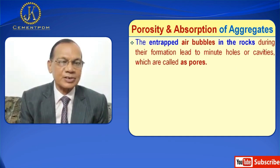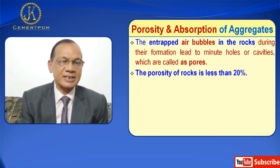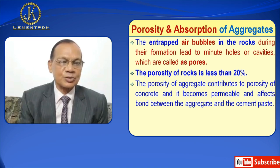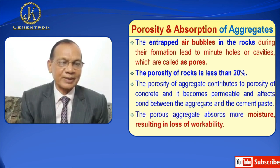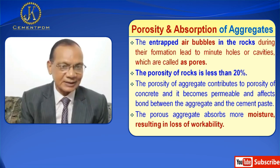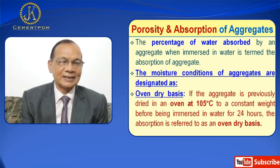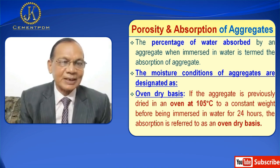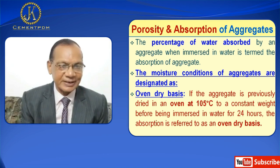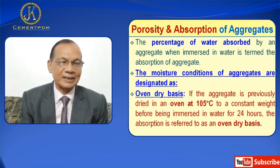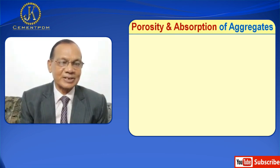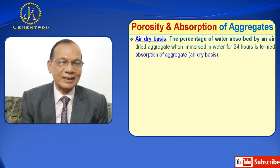Porosity and absorption of aggregate: the entrapped air bubbles in the rocks during their formation lead to minute holes or cavities which are called pores. The porosity of rocks is less than 20 percent. The porosity of aggregate contributes to porosity of concrete and it becomes permeable and affects the bond between the aggregate and the cement. The porous aggregate absorbs more water resulting in loss of workability. The percentage of water absorbed by an aggregate when immersed in water is termed the absorption. The moisture conditions of aggregate are designated as: number one oven-dry basis, if the aggregate is previously dried in an oven at 105 degrees centigrade to a constant weight before being immersed in water for 24 hours, the absorption is referred to as oven-dry. Number two air-dry basis: the percentage of water absorbed by an air-dried aggregate.